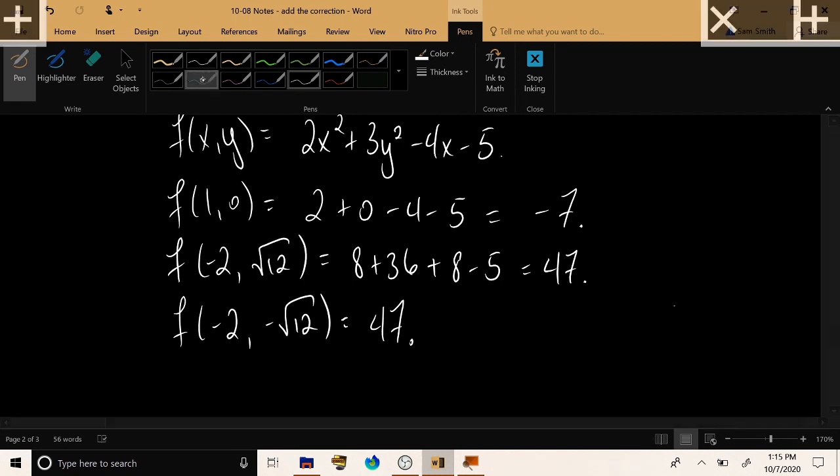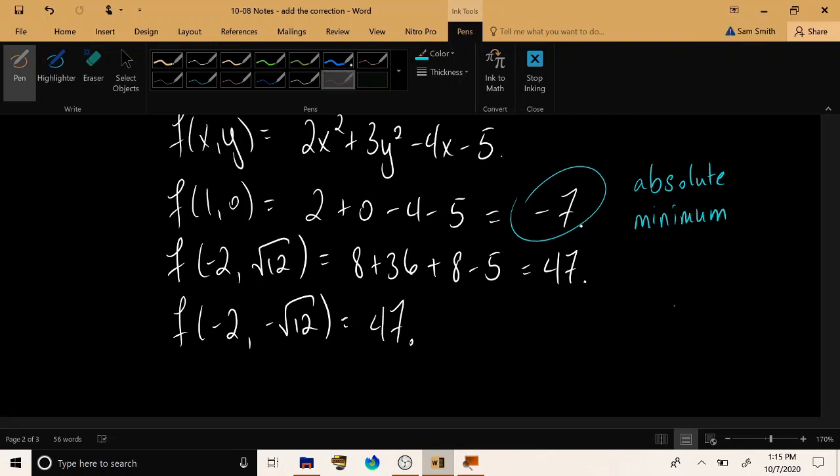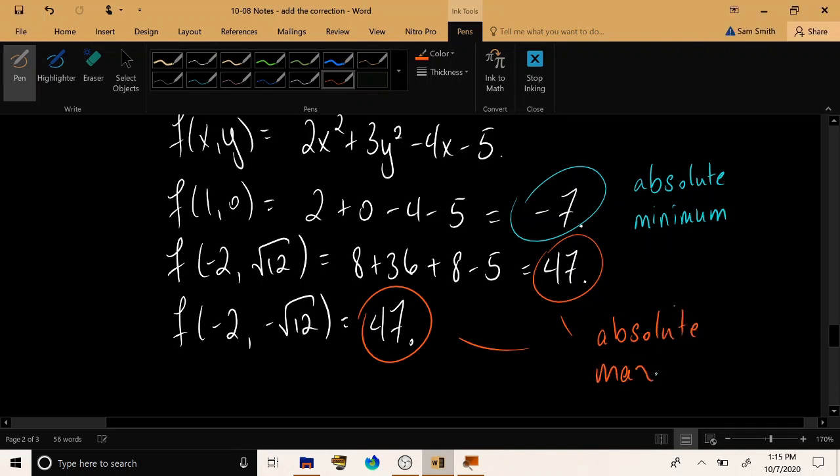So, what was the smallest z value we achieved? We achieved a smallest z value of negative 7. And so, this would be the absolute minimum value for this function on this region. What was the largest z value we obtained? We obtained a largest z value of 47. And that would be the absolute maximum value of this function on the given region, attained at two different points.